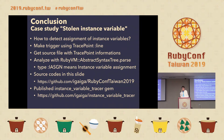Conclusions — how to detect assignment of instance variables: make a trigger using TracePoint line event, get the source file with TracePoint information, analyze with RubyVM::AbstractSyntaxTree.parse, and type IASGN means instance variable assignment. The source code is on GitHub. I also published an instance_variable_tracer gem — you can try gem install instance_variable_tracer. But it's experimental, and it only handles ERB, not Slim or Haml.